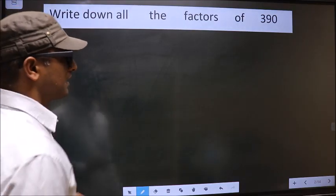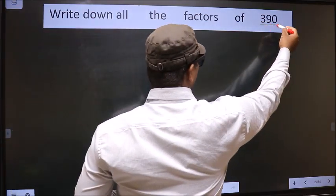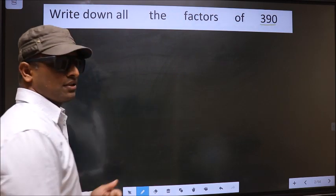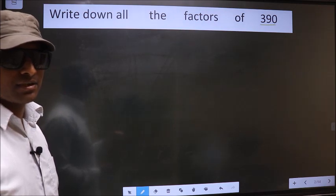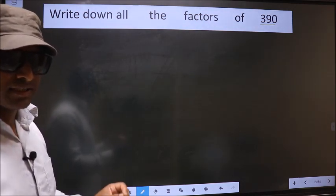Write down all the factors of 390. To write all the factors, first we should do the prime factorization of it. So let us do.